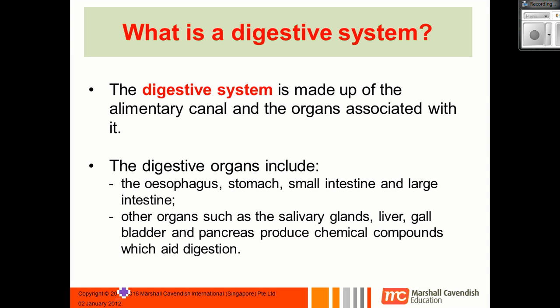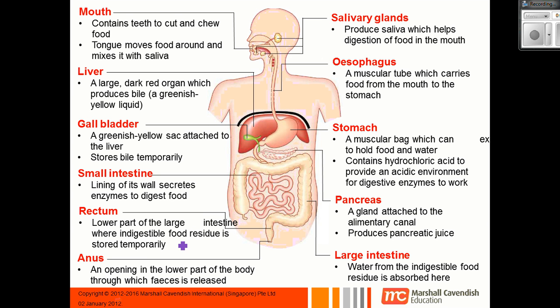After that, we looked at the digestive system, which is made of the alimentary canal and the associated organs. This next slide summarizes all the different parts of the digestive system.